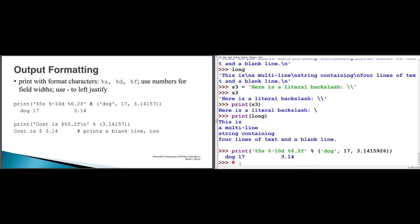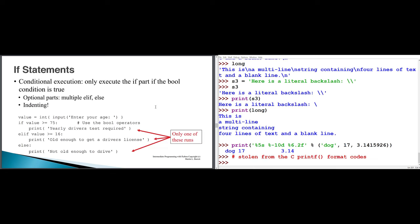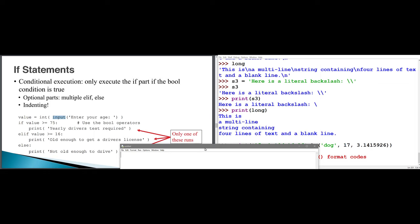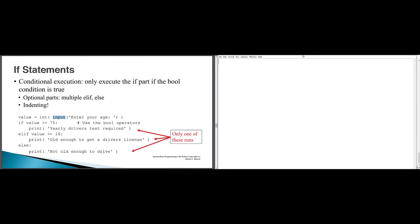We can make decisions using if, and read input using the function named input. Let me open a file and put this code in. I'm going to save this as if_else.py. I'm saying value gets input('enter your age'). The input function displays a prompt and waits for you to type a response, which is returned as a string. Since we want an integer value for the age, we'll convert it using int.